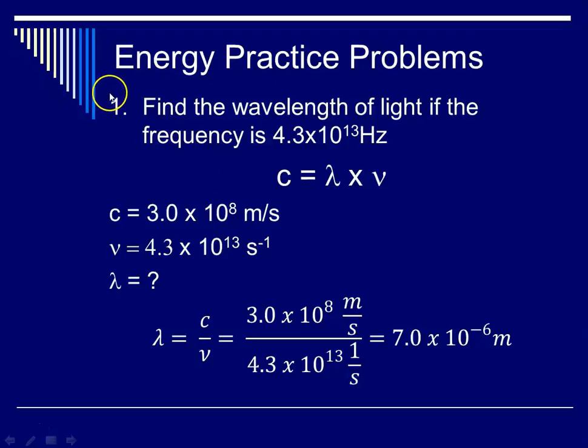So now I'm going to take an energy practice problem off of the energy practice problem worksheet that should be in your chapter 4 packet that Mr. Palmer kindly copied for us. So problem 1 on that page says find the wavelength of light if the frequency is 4.3 times 10 to the 13th hertz. So here we're going to use our C equals wavelength times frequency. We identify our variables. C is our constant, 3 times 10 to the 8th meters per second. Our frequency is 4.3 times 10 to the 13th seconds to the minus 1. Wavelength is what we are solving for.